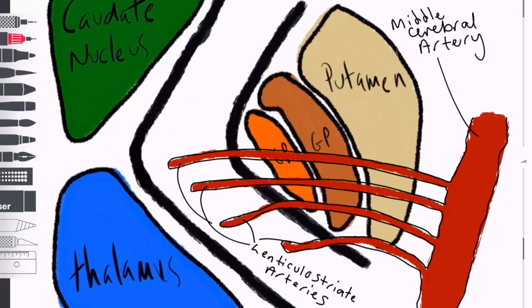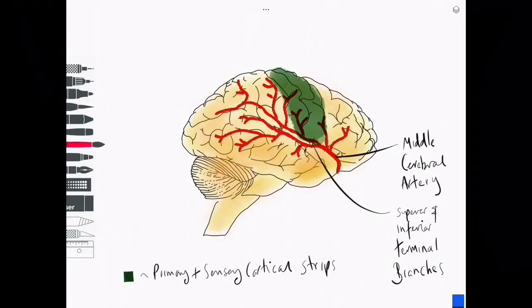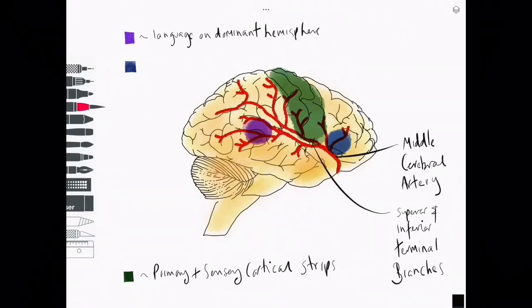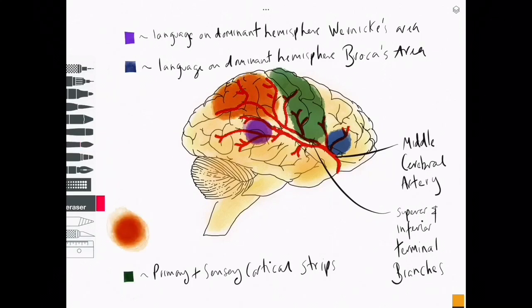The basal ganglia are important in motor control. The internal capsule contains tracts passing to and from the cerebral cortex, including ascending sensory and descending motor tracts from the face and body. The superficial divisions, namely the superior and inferior branches, supply the lateral parts of the primary motor and somatosensory strips. However, in the dominant hemisphere, which is by far most commonly on the left, the superficial divisions also supply Broca's and Wernicke's area, which are crucially important in producing and planning speech. In both hemispheres, they also supply other association areas which have less well-defined functions, but include spatial awareness.